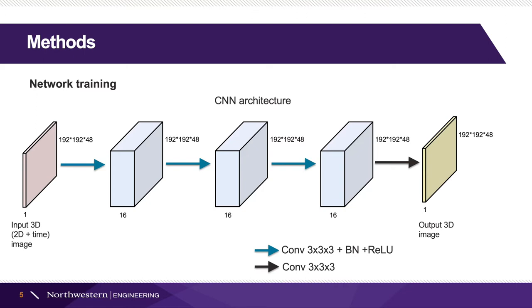Here is the CNN architecture. We used totally five layers. The first layer is the input layer, which takes a 3D image.